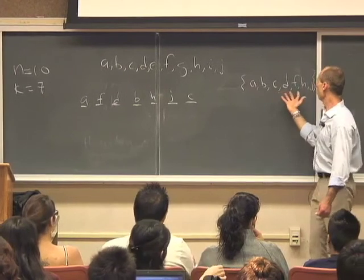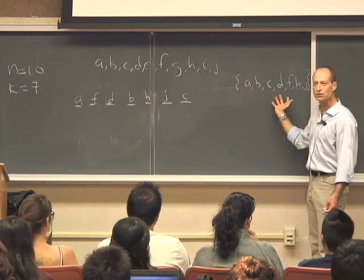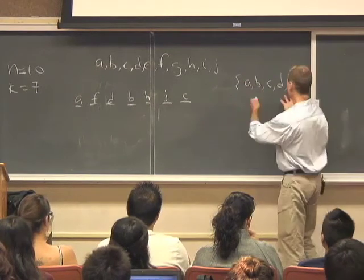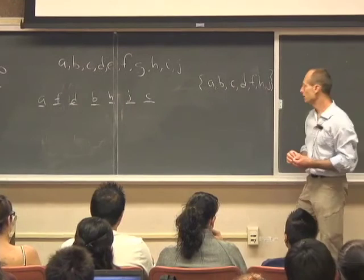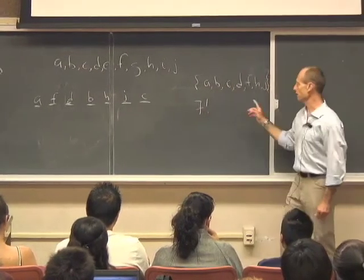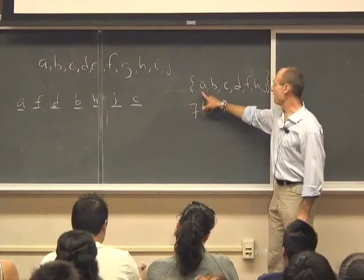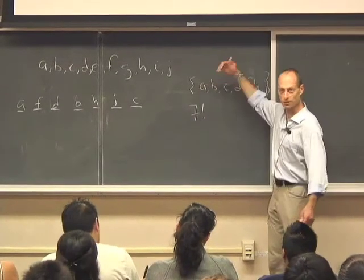So how many ways are there of putting a set of seven things into some order? We've been given this set now. We've picked seven from the 10, and now we want to put these into some particular order. So there's seven factorial ways of ordering these things. I could put the A first. Having put the A first, I have six choices. I have seven choices for what to put first, might be the A.